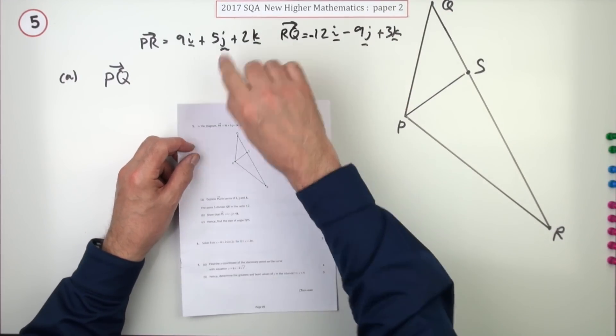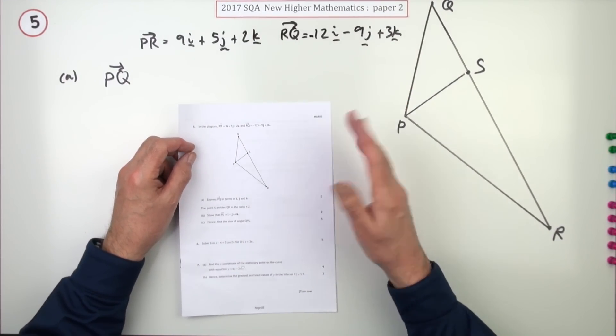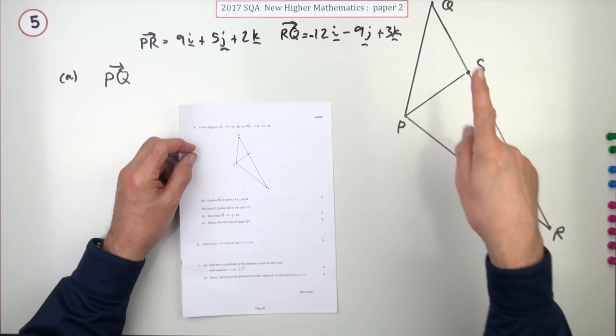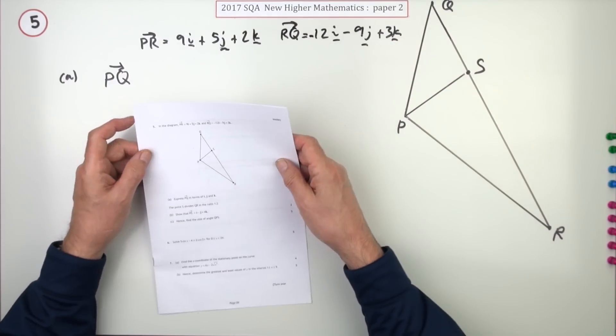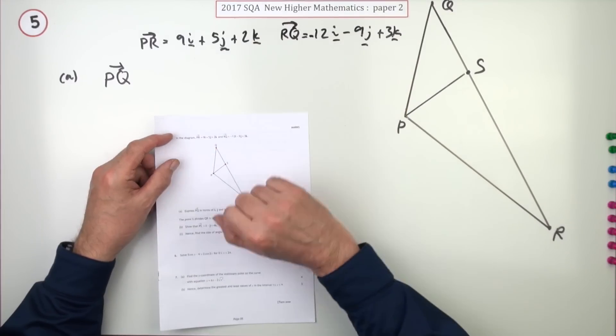Question five from paper two of the 2017 New Higher Maths. Here we go, nine marks for a vectors question. Here's a diagram, so there's various pathways you can travel along. You're given the vectors for two of them here.